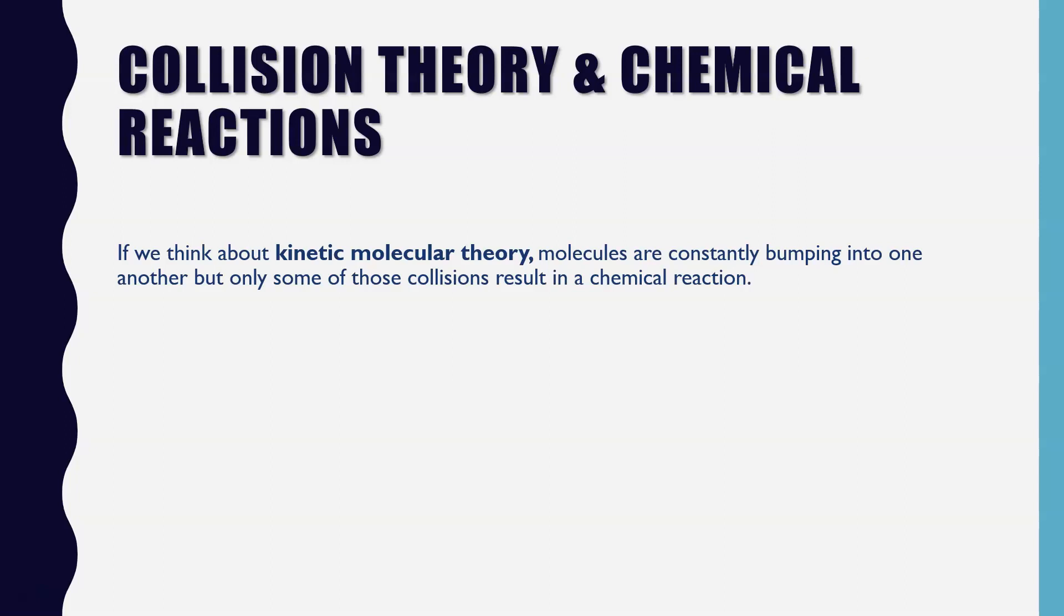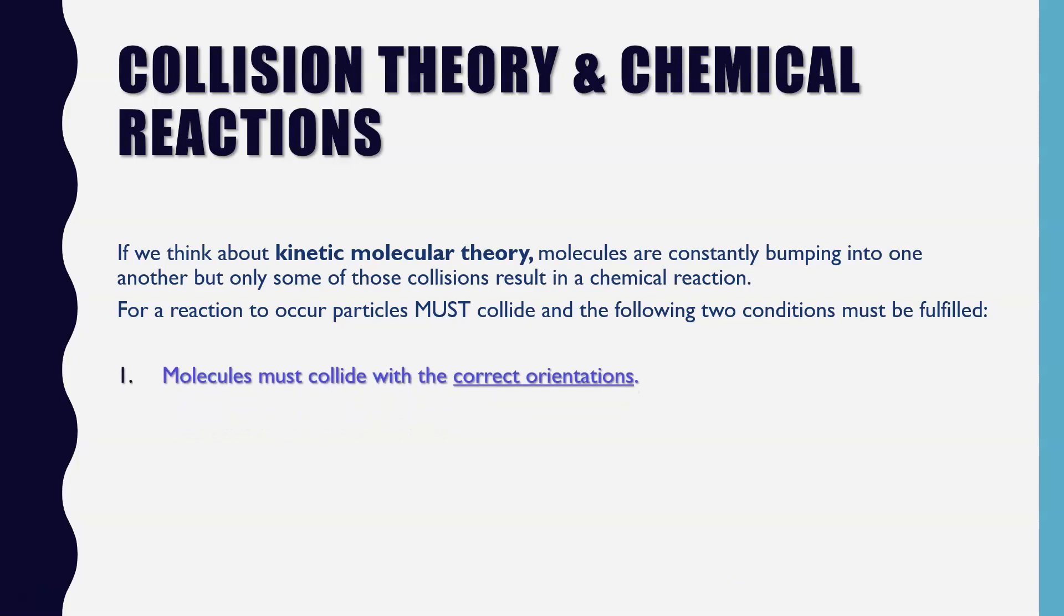All righty, so as I said, thinking of the collision theory, and we're now thinking of chemical reactions. So we've got this kinetic molecular theory, we've got the collision theory, and we've got chemical reactions. How does this all come together? Well basically we need atoms to bump together, to collide, for a chemical reaction to take place. Now there's two things though, two points that we need to occur. It's not just about two molecules colliding.